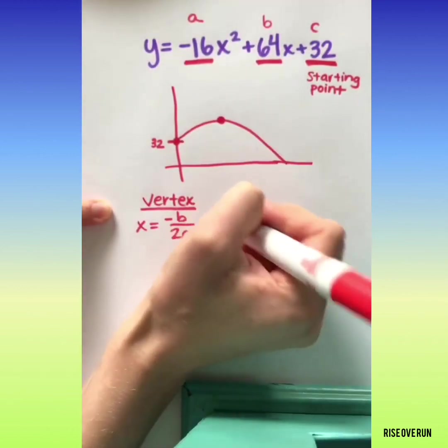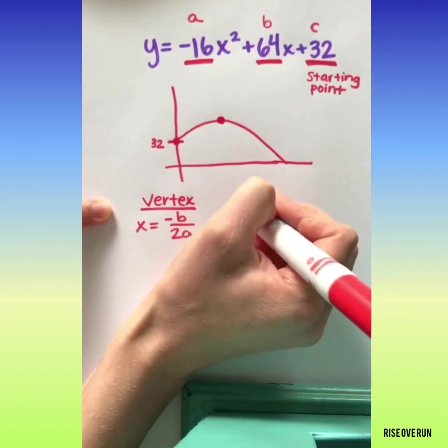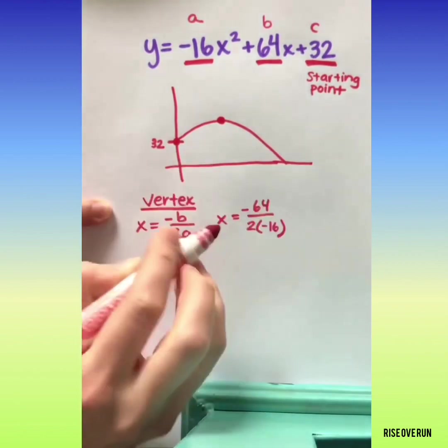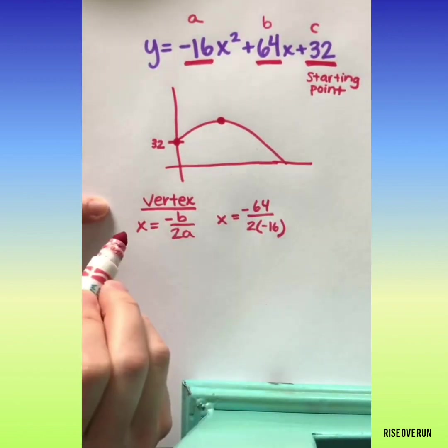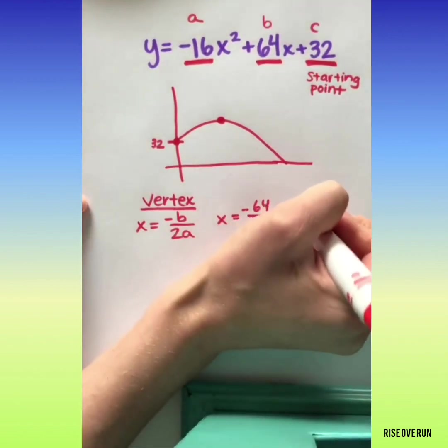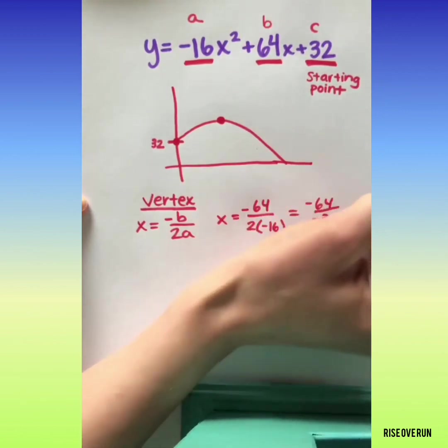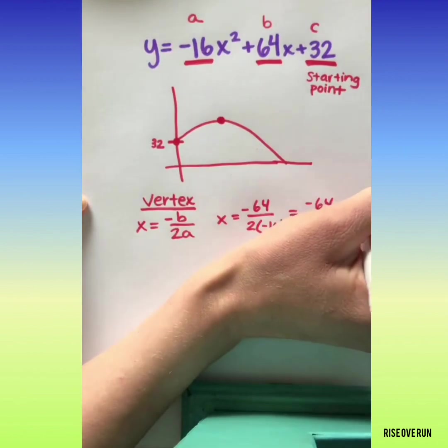So let's plug in b and a. This will find the x value of the vertex.